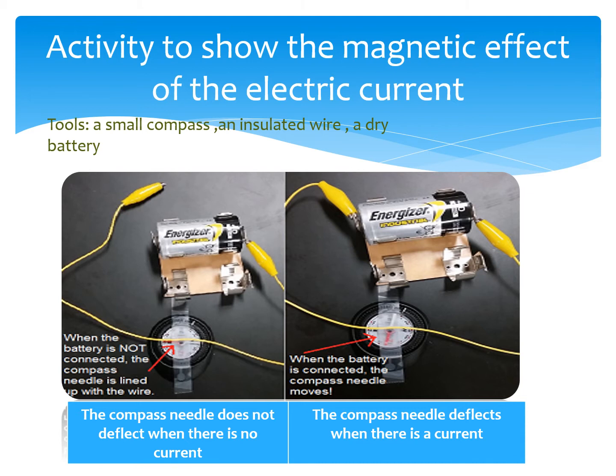When I connect the wire with the battery and observe the compass, the compass needle will be deflected. So the electric current generates a magnetic effect — magnetism can be generated by electricity.